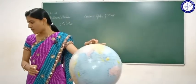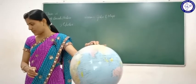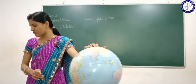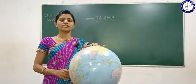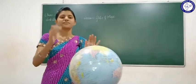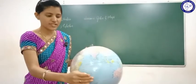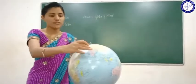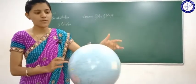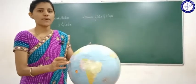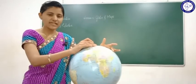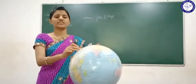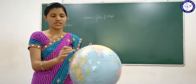We can see only one side of the earth at a time. But the globe, which is the model of the earth, can give us the view of the other side as well, since we can rotate the globe. If we take a picture, we can see only one side of the earth, but if we look at it in the form of a globe, we can rotate it and see all the parts of the earth. So the globe is one of the most useful teaching aids for the better understanding of geographical features of the earth.